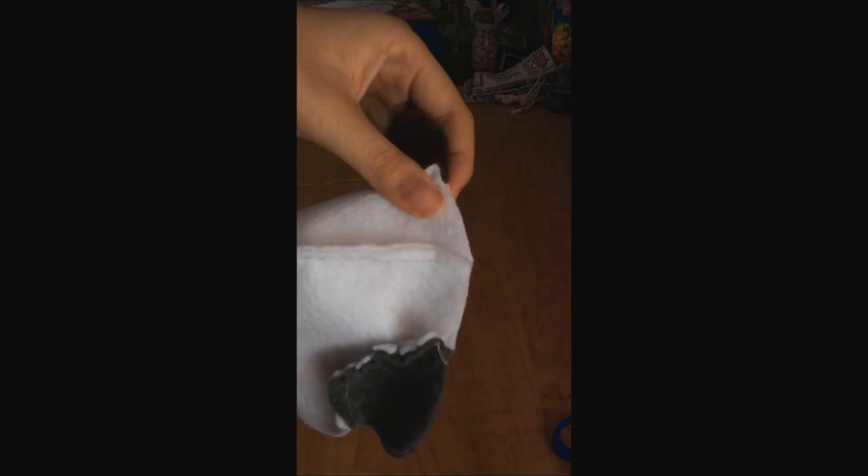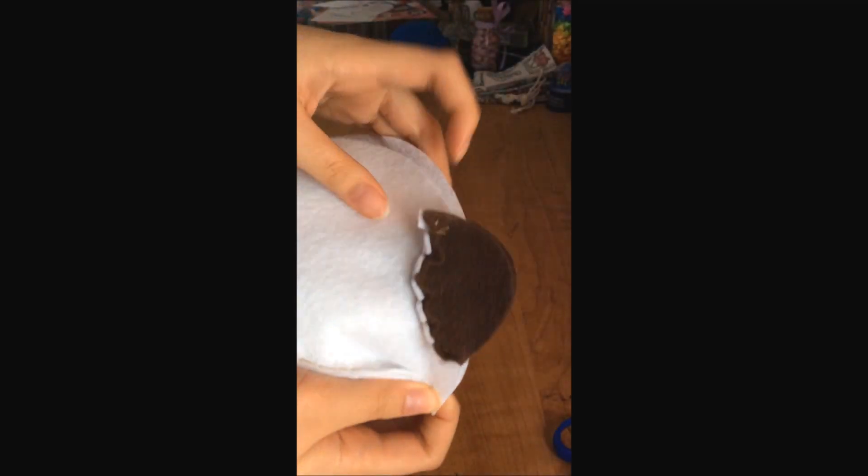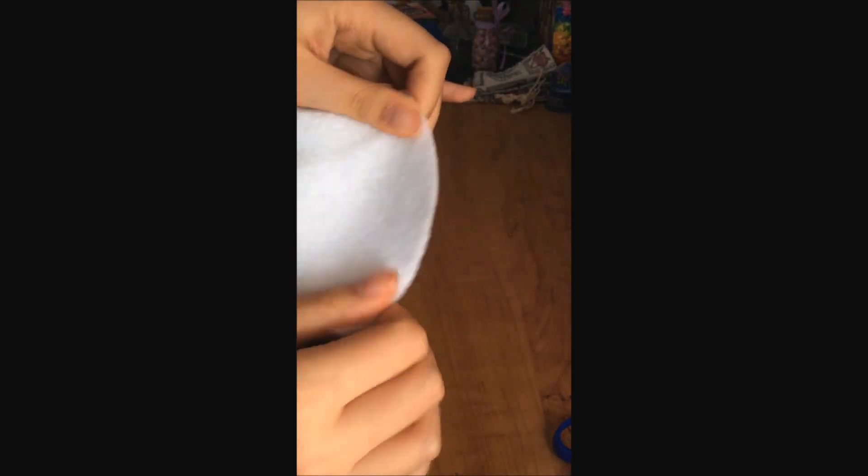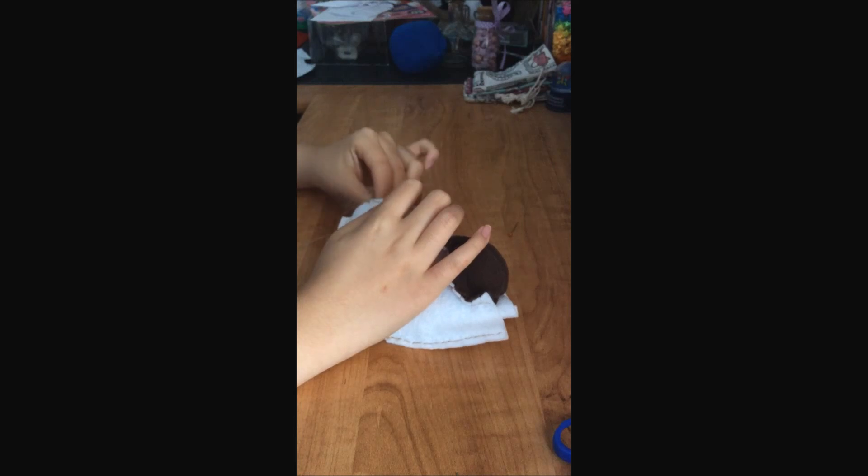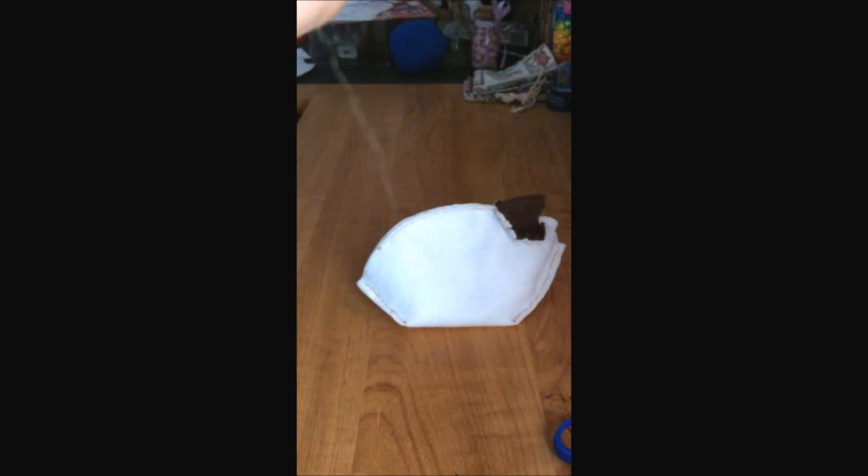When both sides are done, take one side and flip it. After flipping it, take the one that you did not flip and place it. After putting it over, match up the edges of the felt so that they're even on both sides.